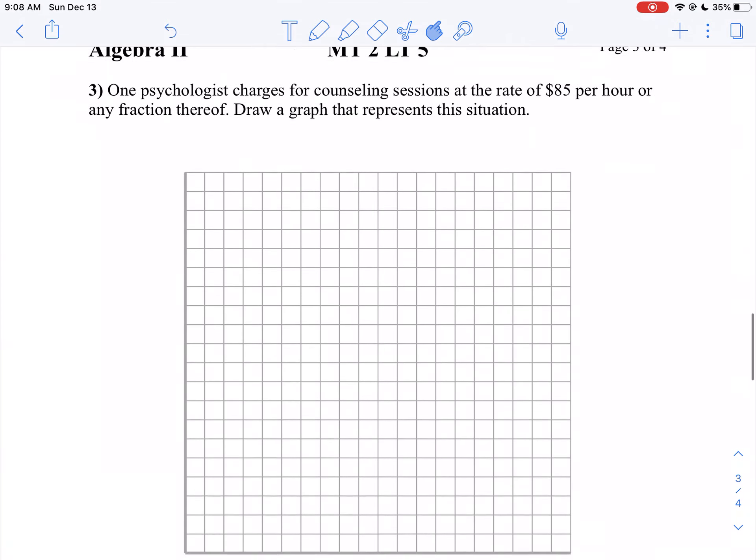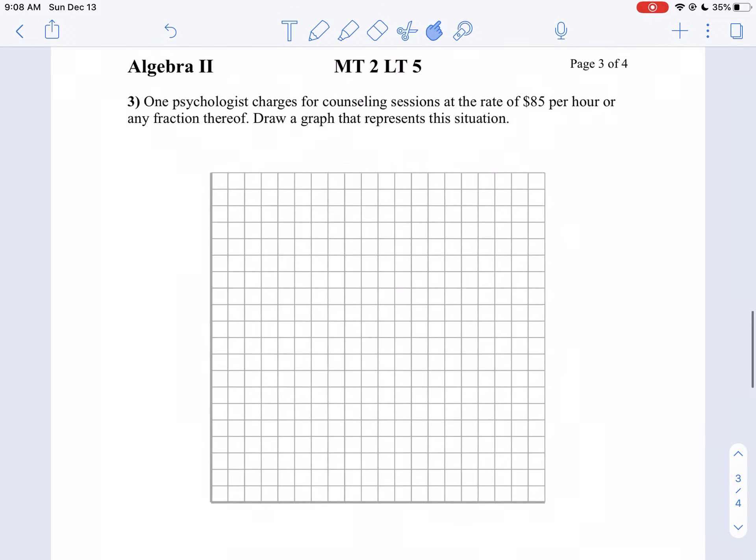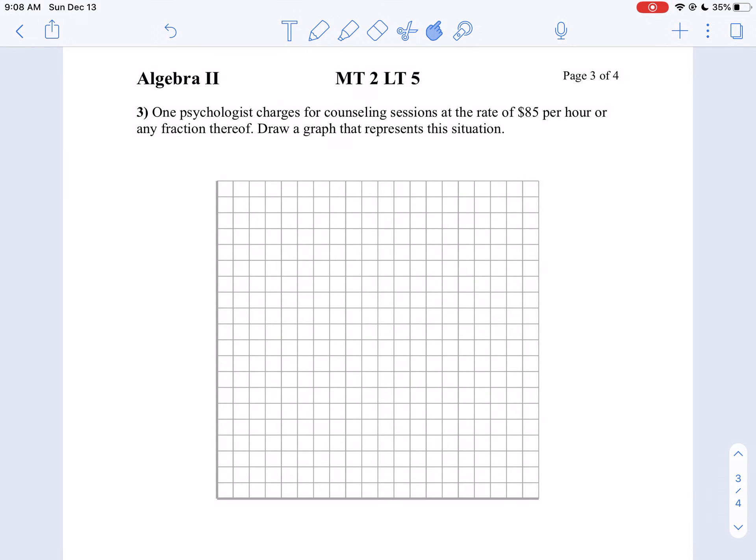Now we can apply the greatest integer function or variations to an application problem. It says, one psychologist charges for counseling sessions at a rate of $85 per hour or any fraction of. Draw a graph to represent this. So what we're going to do, let's represent time as our independent variable.